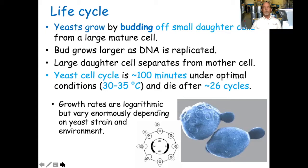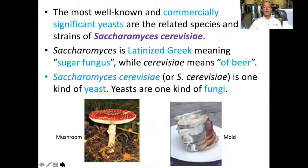Growth rates are logarithmic, but vary enormously depending on the yeast strain and the environment. The most well-known and commercially significant yeasts are the related species and strains of Saccharomyces cerevisiae. Saccharomyces is a Latinized Greek meaning sugar fungus, while cerevisiae means of beer. Yeasts are one kind of fungi, including mushrooms and mold.